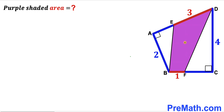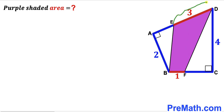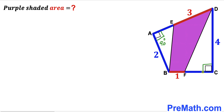Welcome to Pre-Math. In this video we have got this purple shaded quadrilateral BEDF fully confined in another quadrilateral ABCD, such that segment BF has a length of 1 unit, side AB is 2 units, segment DE is 3 units, and side CD is 4 units. Moreover, two of the angles are 90 degrees each. Our task is to calculate the area of this purple shaded quadrilateral BEDF.